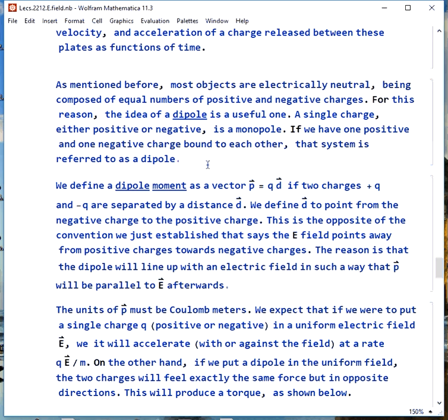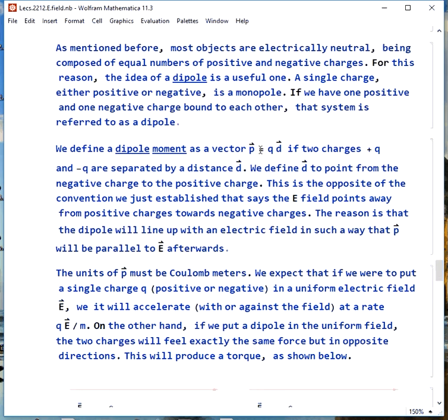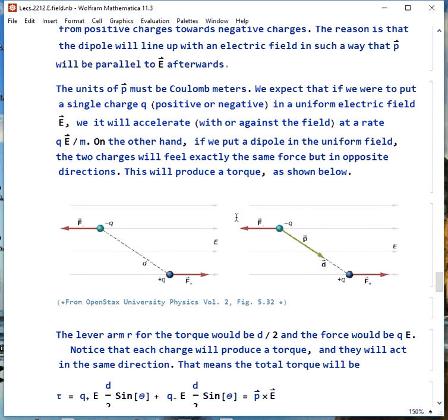We can define a dipole moment as a vector. P is q times d, if the two charges are plus q and minus q, and they're separated by a distance d. Notice this is a vector. We define d to point from the negative charge to the positive charge. That's the opposite of the electric field convention we just established that says e points away from positive charges and towards negative. The reason we do this is, this way a dipole will line up with an electric field in such a way that p is parallel to e, when it's in its lowest energy state. The units of p have to be coulomb meters.